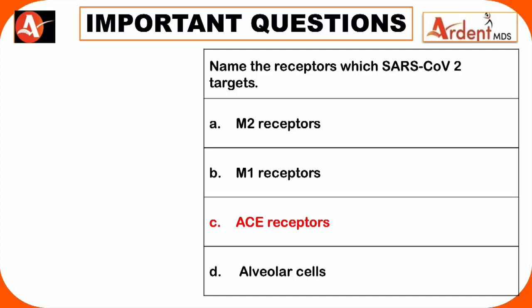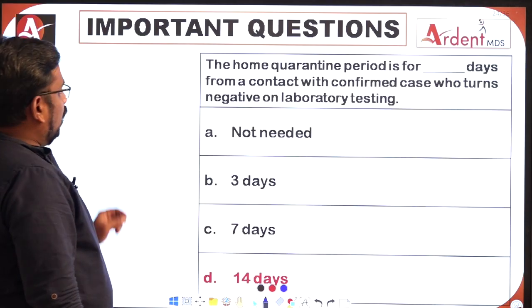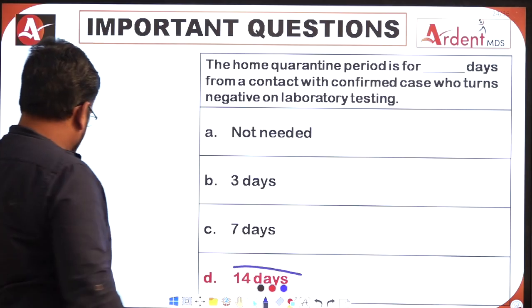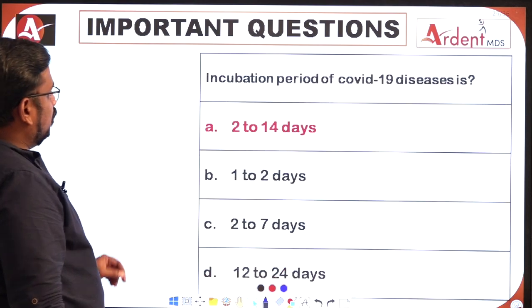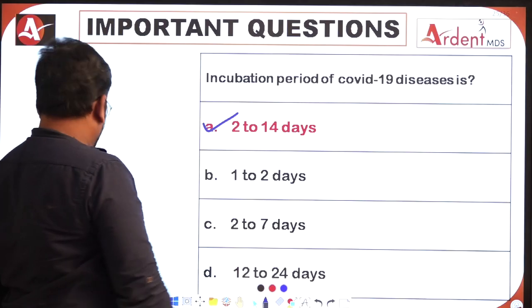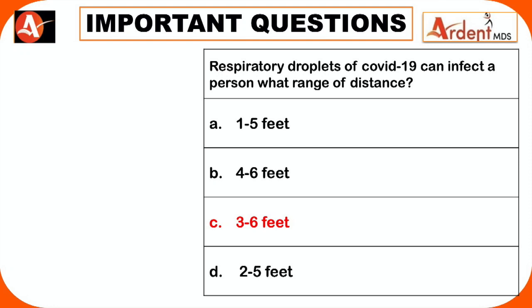The receptor that SARS-CoV-2 targets is the ACE2 receptor. The home quarantine period for contact with a confirmed case is 14 days. The incubation period for COVID-19 is around 2 to 14 days.